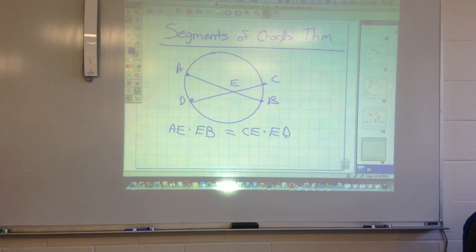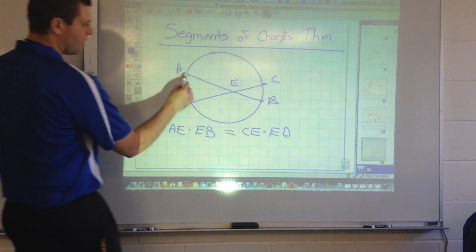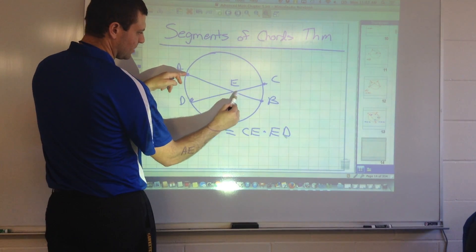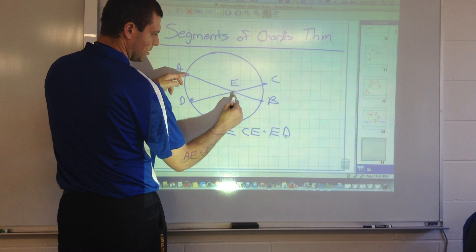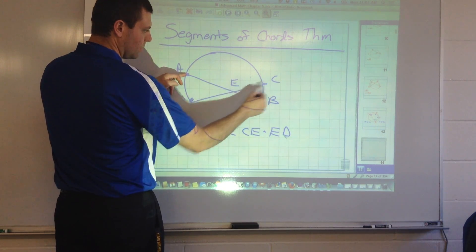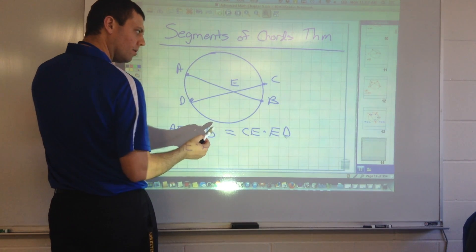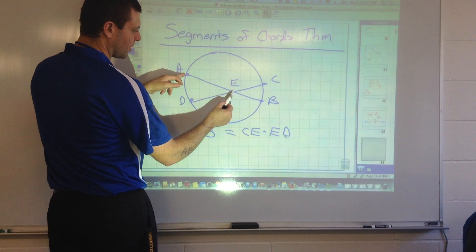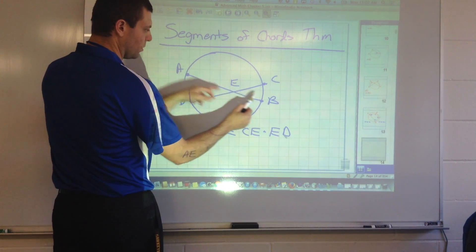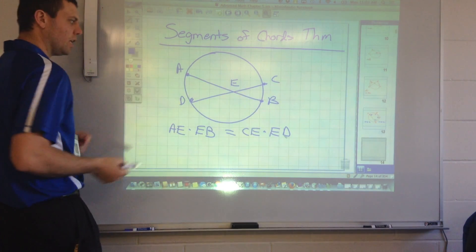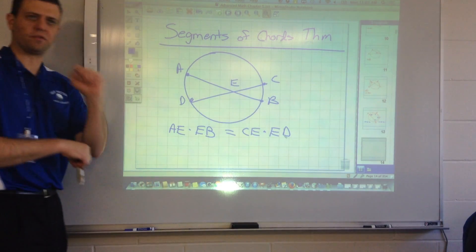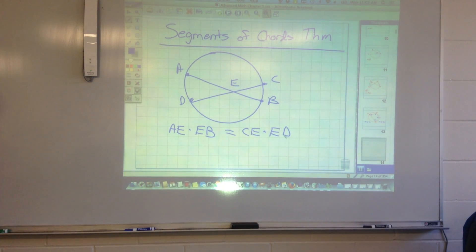The segment of chords theorem says if you take this part of a segment times the other part, assuming the other chord cuts that chord into two, you take this part, this segment of a chord, times the other segment of a chord, it will always equal the same number as if you did with the other chord itself. Okay, so it's a segment of chords theorem.